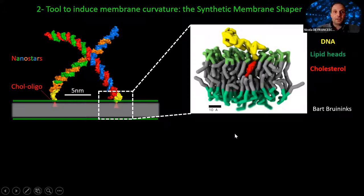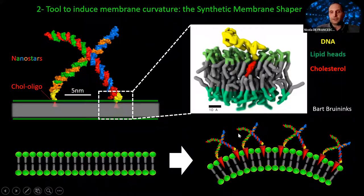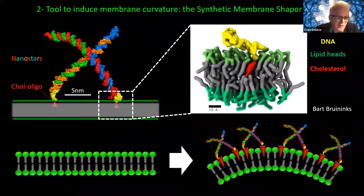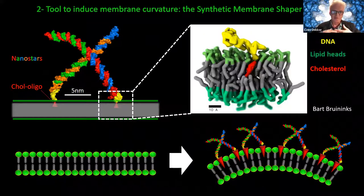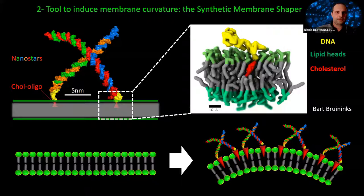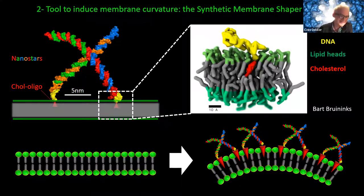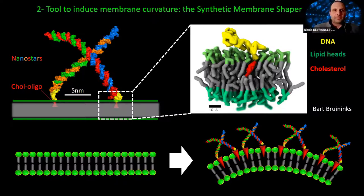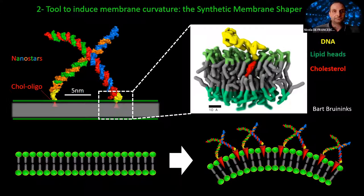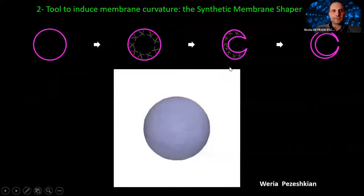The mechanism is actually very simple. When the cholesterol is inserted asymmetrically — on only one side of the membrane — it expands the area of that leaflet. The presence of nanostars on only one side causes the membrane to bend toward that side. This means that if we reconstitute the SMS inside a liposome, the membrane will bend inward, resulting in the formation of a stomatocyte. Here you can see the process rendered by large-scale membrane simulation by our collaborator Varia Periskinova, now at the University of Copenhagen.